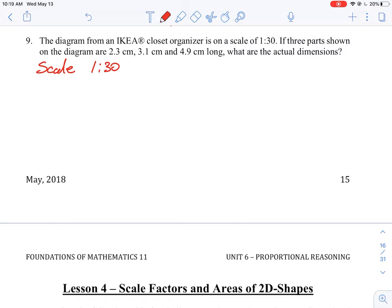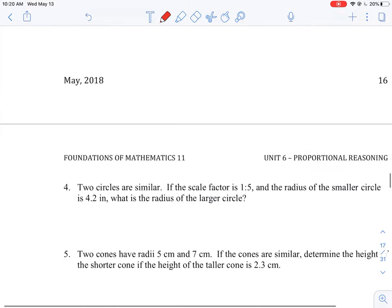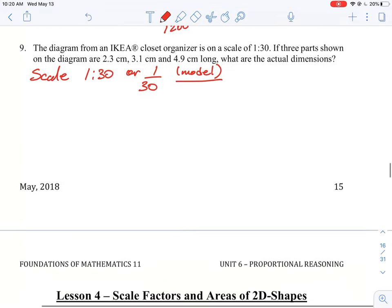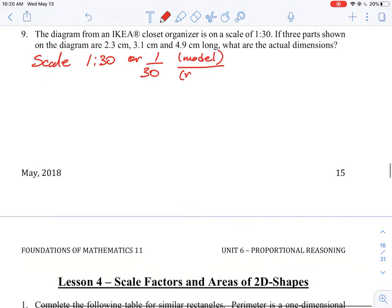So we write it, whether we write it as a fraction or whether we write it as a ratio, what that is telling us is that for every one unit on the model, so this could be the model diagram or the model shape, the real object is 30 times greater. So you can say that the real one here is 30 times greater.